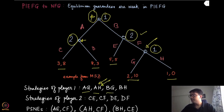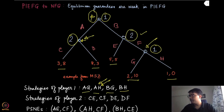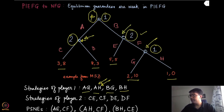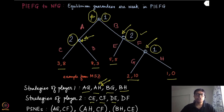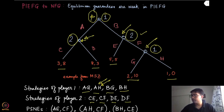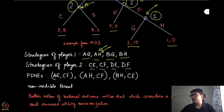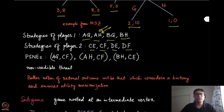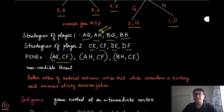Similarly, player one's strategies include AH, BG, and BH. Player two can play at its two non-terminal histories based on whatever actions have been picked, giving strategies CE, CF, DE, and DF. You can do a similar exercise as in the last module: transform this game into a normal form game and find the PSNEs. There are three PSNEs in this case.